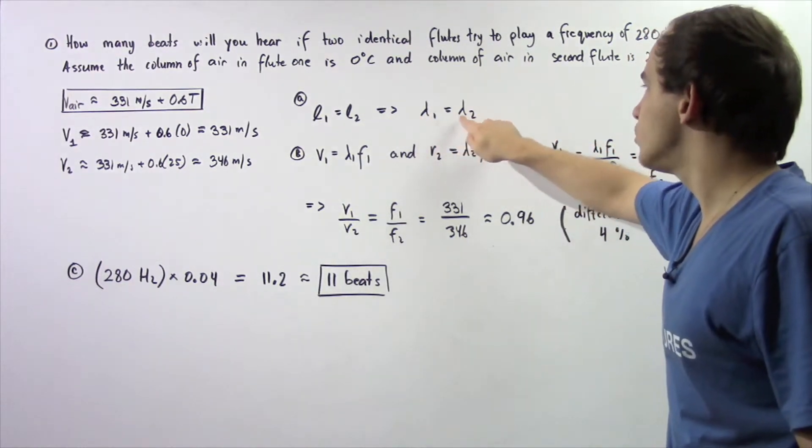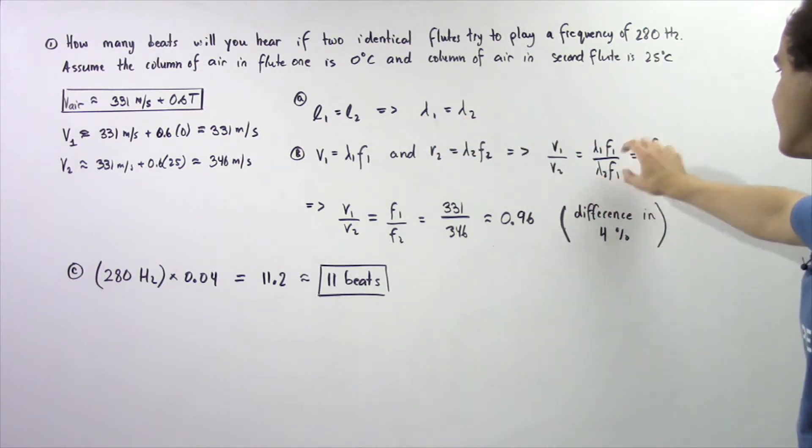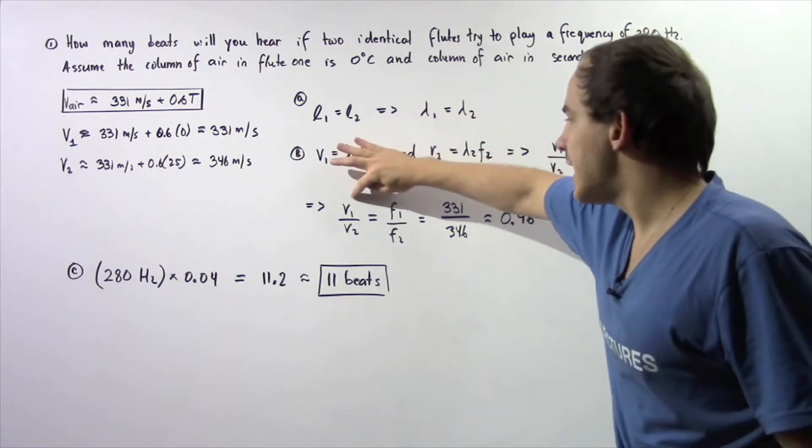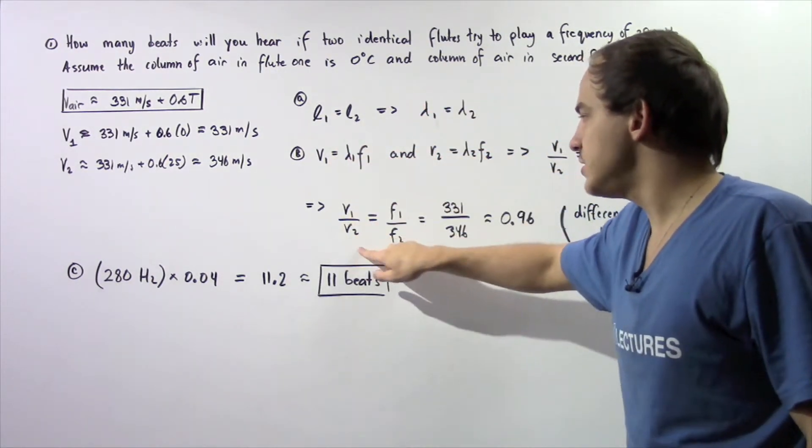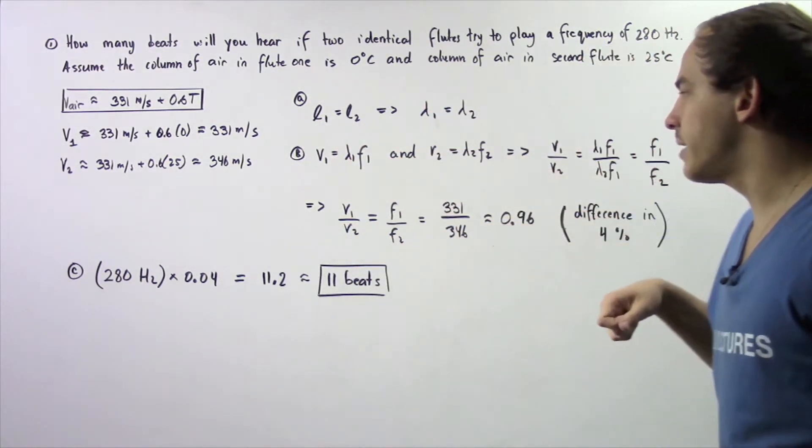Now, because lambda one is equal to lambda two, these cancel and we're left with the velocity V1 divided by V2 is equal to F1 divided by F2.